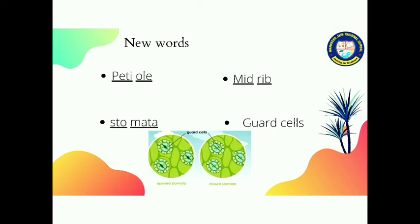Next word is stomata. Stomata has tiny holes and pores in the leaves. The leaves are small, that is known as stomata.